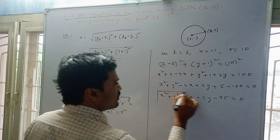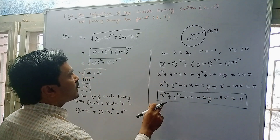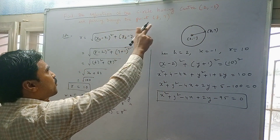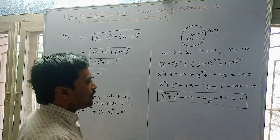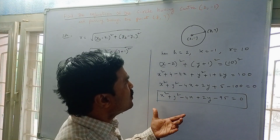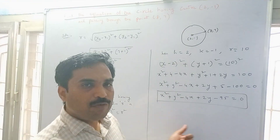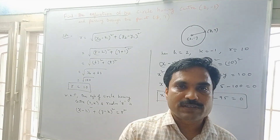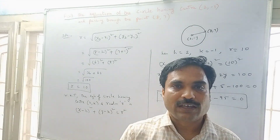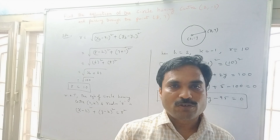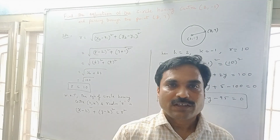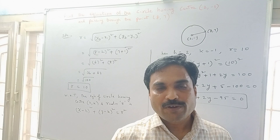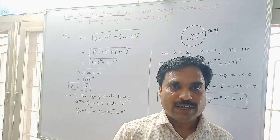So x² + y² - 4x + 2y - 95 = 0 is the required equation of the circle having center (2, -1) and passing through the point (8, 7). If you want to do more problems of this kind, I've given a link in the description. This video is particularly useful to engineering and polytechnic students. Thank you for watching — please like and subscribe for further updates.